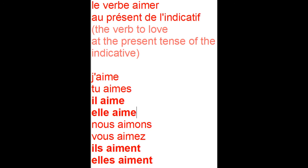In English you put the S for the third person singular — he, she, it. But in French, you do that for the second person singular, like 'tu.' Remember that. So: j'aime, tu aimes, il aime, elle aime, nous aimons, vous aimez, ils aiment, elles aiment.